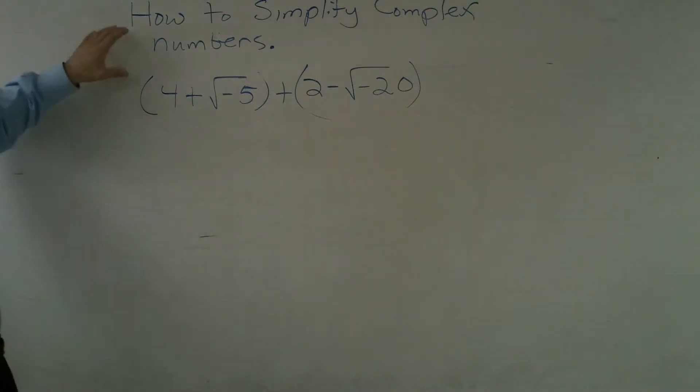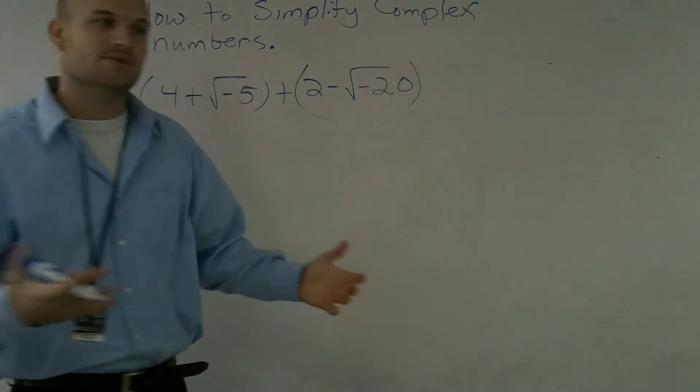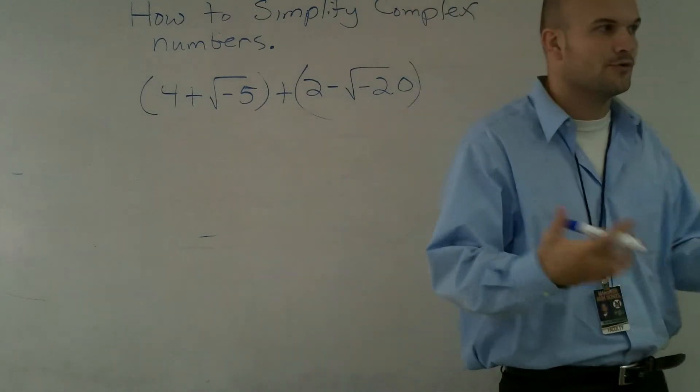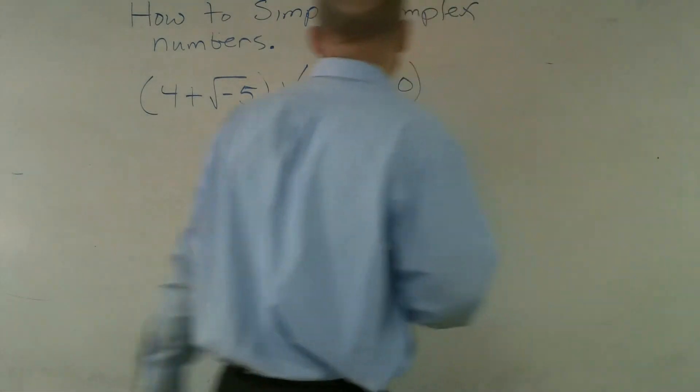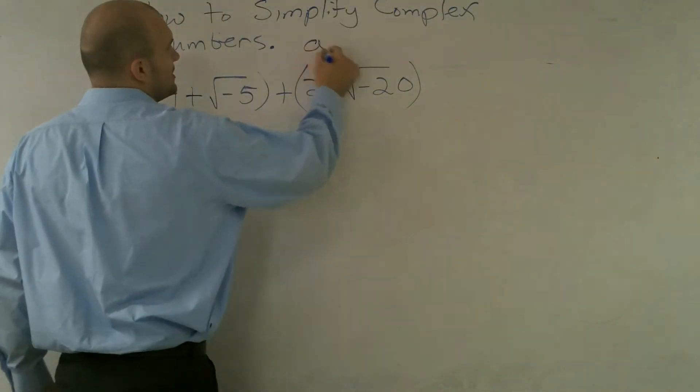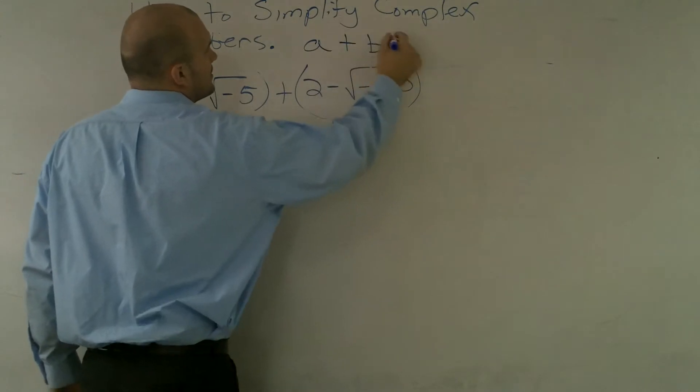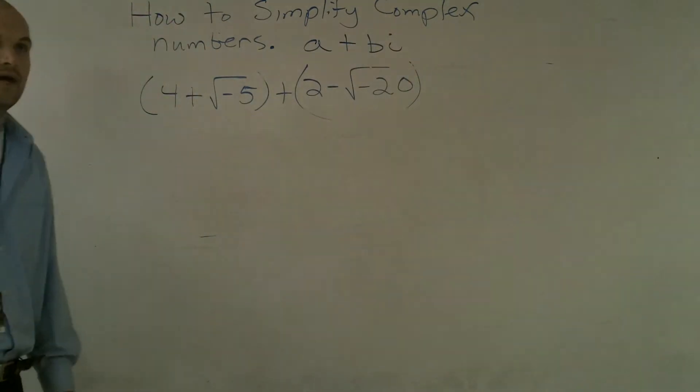What I want to show you is how to simplify complex numbers. When given complex numbers, we need to know how they're written, what kind of format they're in. Complex numbers are written in the form a + bi.